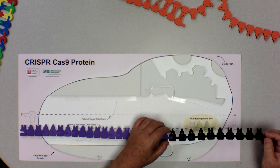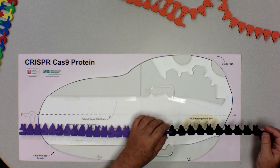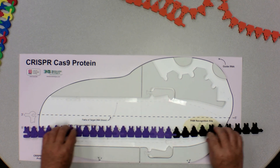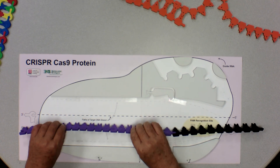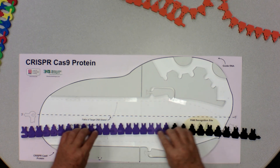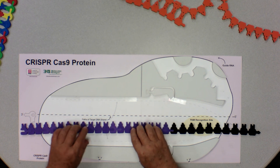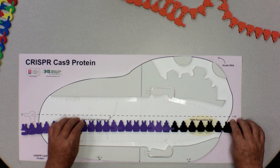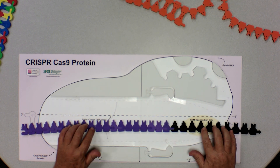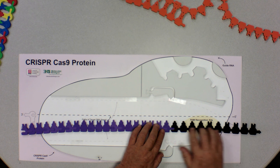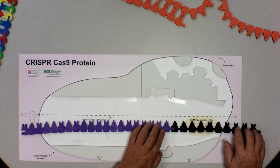The first 20 nucleotides are purple, and then the next few nucleotides are colored black. This represents repeat DNA. This is spacer DNA. The purple part is complementary to viral DNA. This is repeat — this is CRISPR. This is a short palindromic repeat.